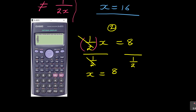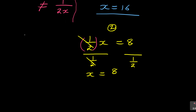If you do that, it computes 8 ÷ 1 ÷ 2, which gives you 4 instead of 16 — and that usually costs you. What you're supposed to do: 8 is the number on top, so you enter 8 and then the fraction 1/2 goes at the bottom. When you enter it correctly as 8 ÷ (1/2), the calculator gives you 16.